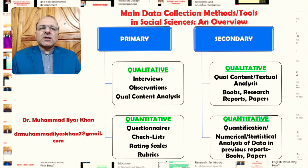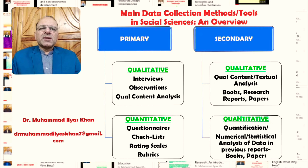The secondary data collection tools in qualitative research include qualitative content or textual analysis, where qualitative text — for example, content in books, research reports, or papers — is analyzed using thematic analysis. Because books and research reports and papers are generally secondary data, they are not collected through primary data collection tools, which is why we say these are secondary sources of qualitative data.